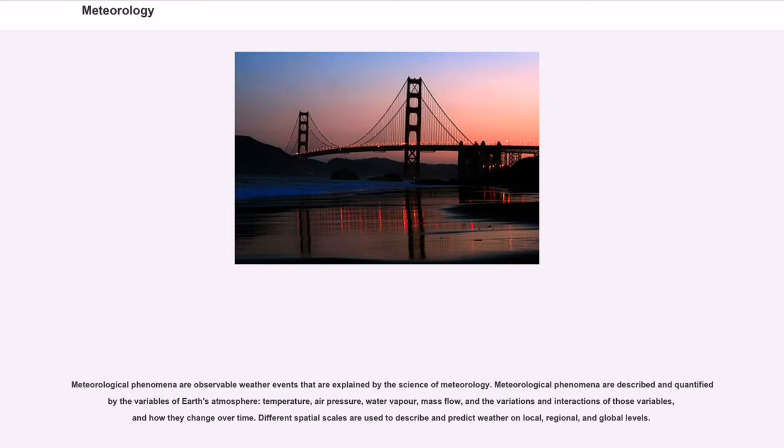Meteorological phenomena are observable weather events that are explained by the science of meteorology. Meteorological phenomena are described and quantified by the variables of Earth's atmosphere: temperature, air pressure, water vapor, mass flow, and the variations and interactions of those variables, and how they change over time. Different spatial scales are used to describe and predict weather on local, regional, and global levels.